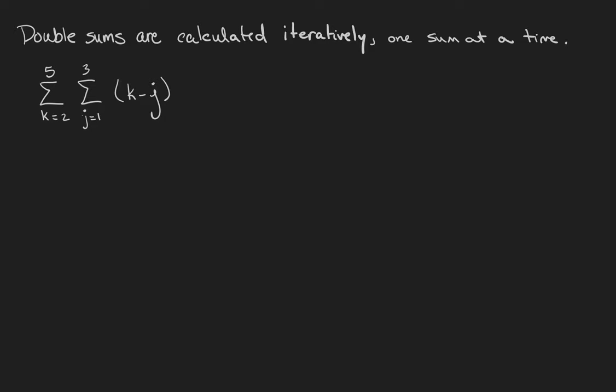If I iterate over the k's first, I get the sum from 1 to 3 of 2 minus j. This is the k equals 2 term of the sum.